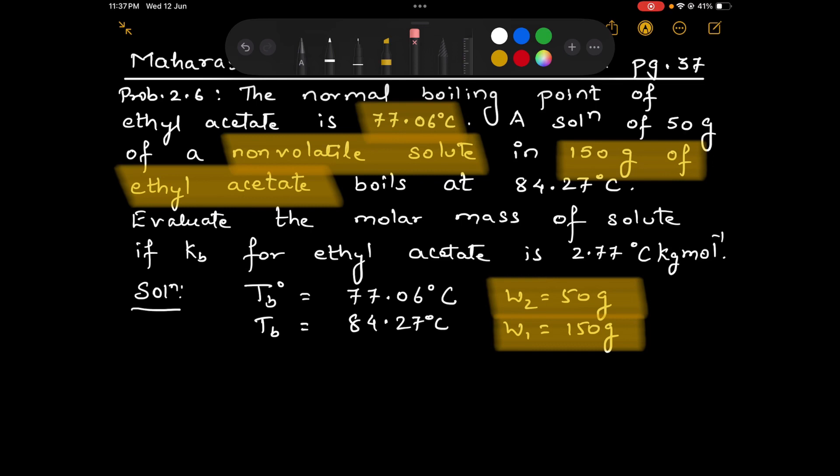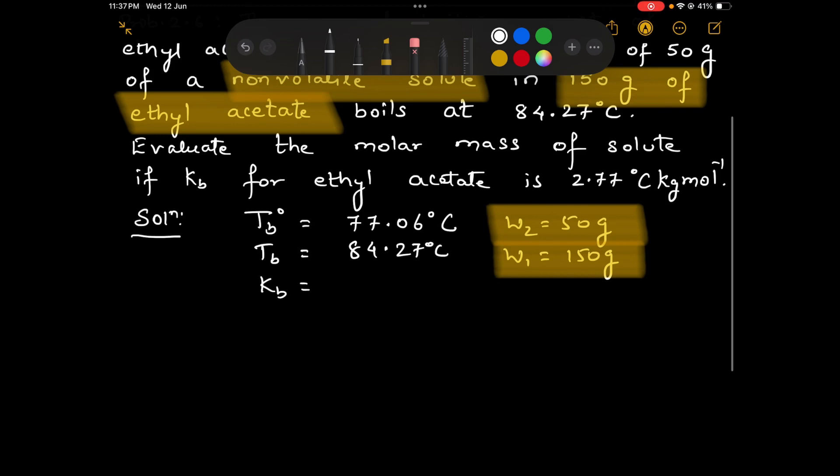evaluate the molar mass of the solute if KB for ethyl acetate is 2.77 degree Celsius kg mole inverse.